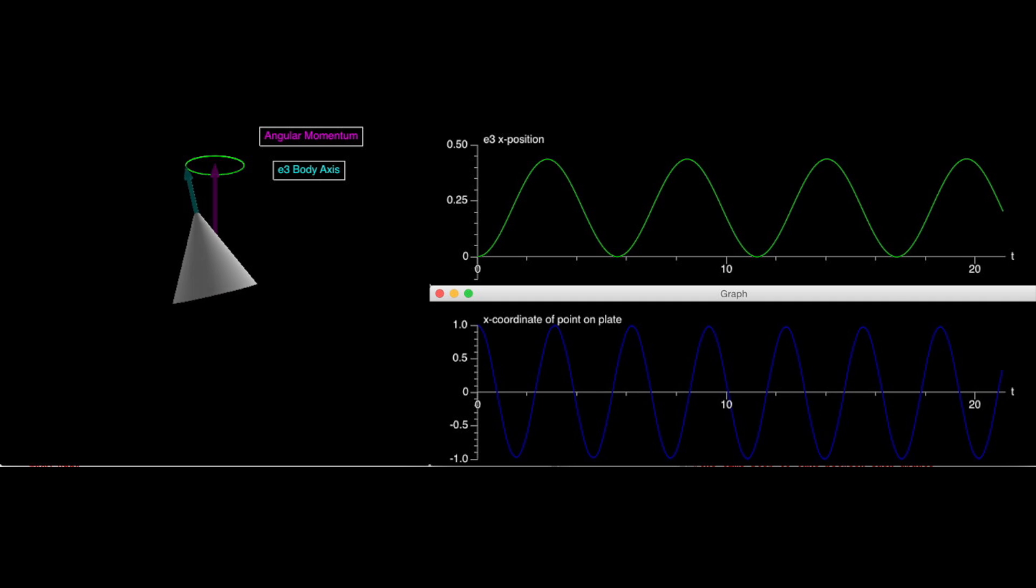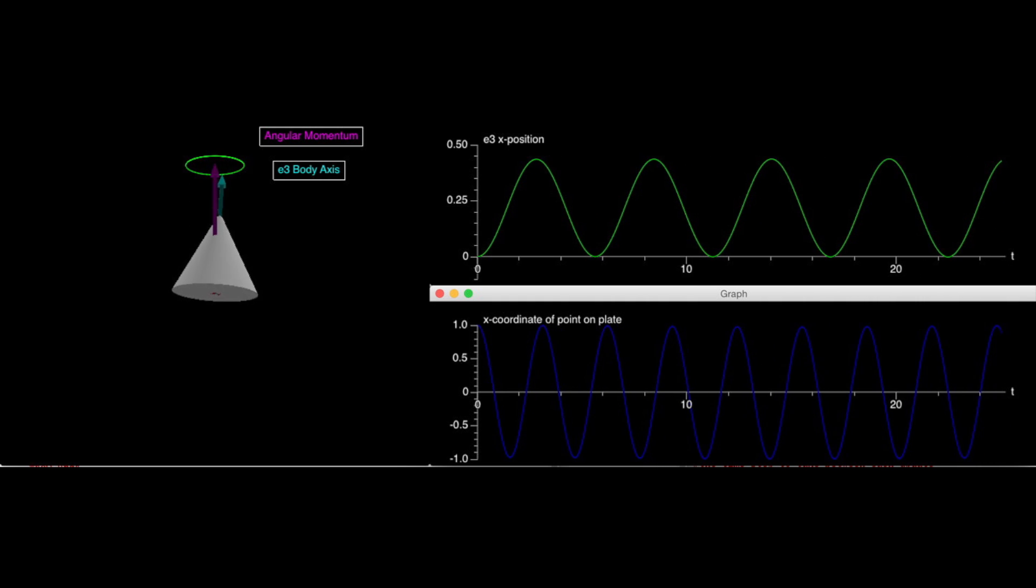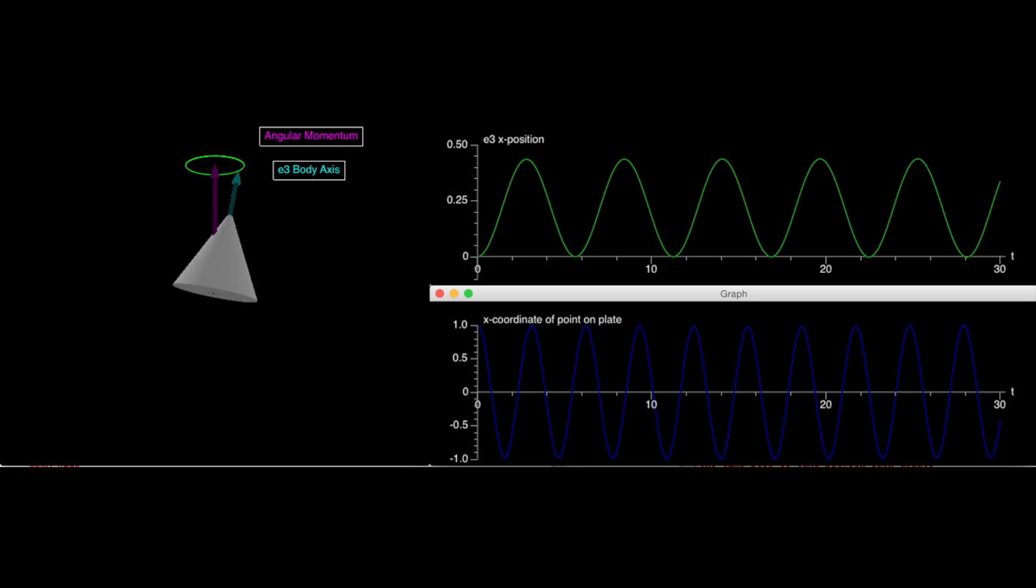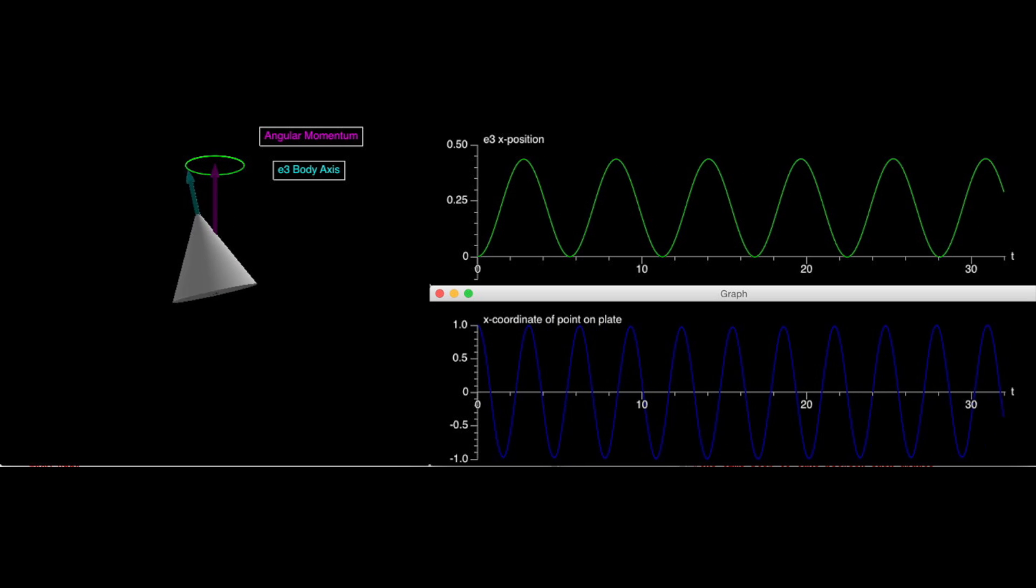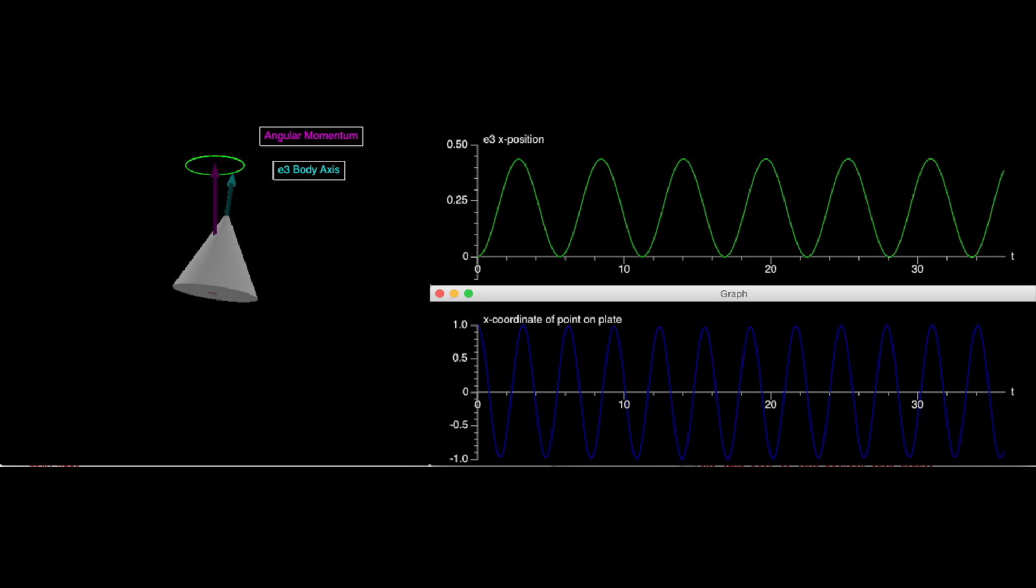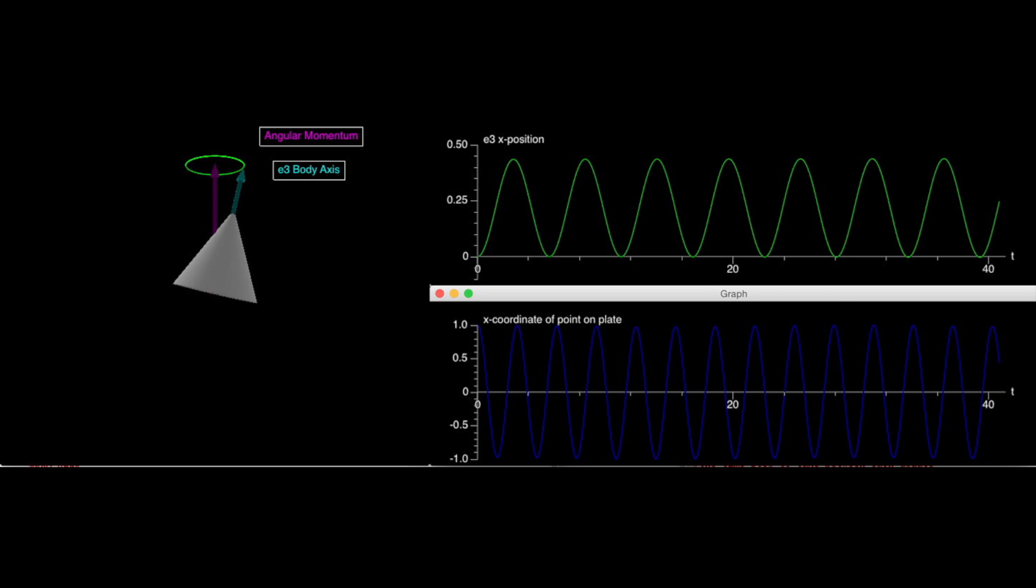Note here that based on the graphs, we see the ratio of wobble-to-spin for the cone is actually close to what Feynman incorrectly predicted for the plate because it looks like it is a little more than one half. This makes sense, as when we solved the final equation we found in the derivation earlier for the precession of E3 around the angular momentum, but used the principal moments of a cone instead of a plate, we find that the ratio of wobble-to-spin should be exactly 6 elevenths.